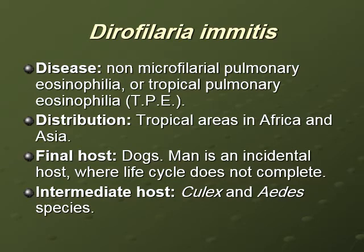This is the last lecture for nematode parasites. We can take an idea about Dirofilaria immitis. We know from the past lecture that Dirofilaria immitis is non-microfilarial pulmonary eosinophilia, or tropical pulmonary eosinophilia, or amicrofilaremic filariasis, as we call it. Its distribution is in tropical areas in Africa and Asia and in the areas endemic with lymphatic filariasis.